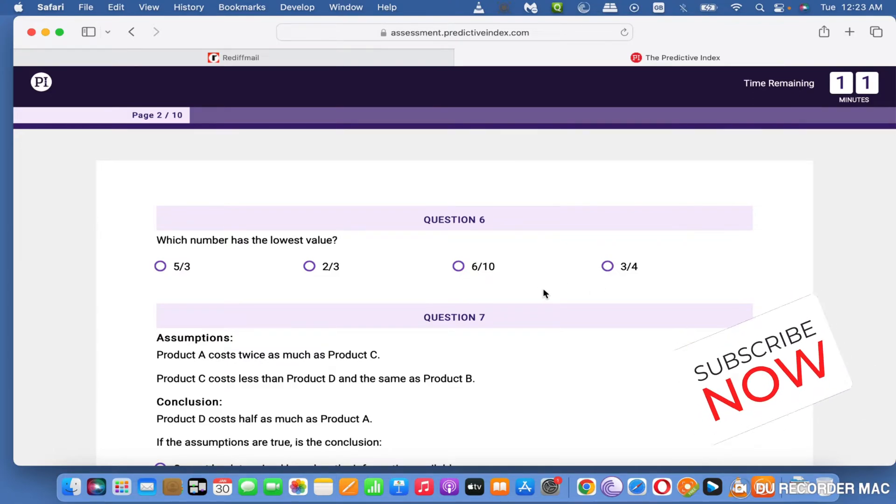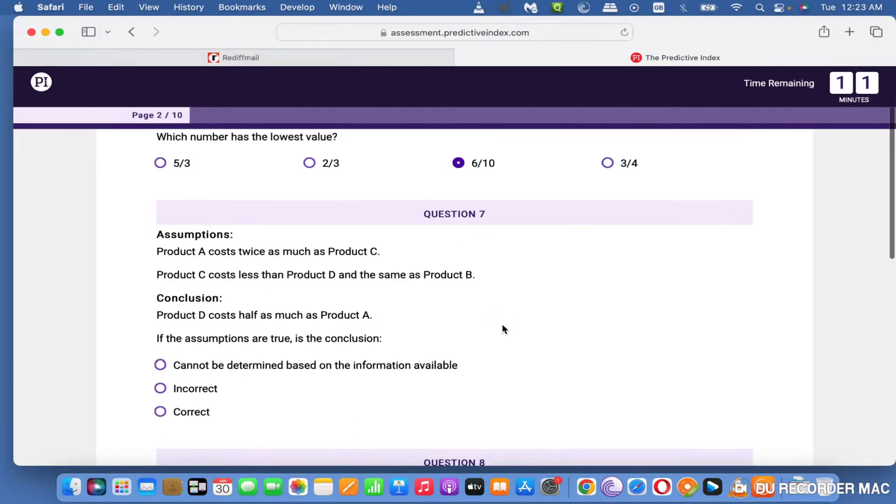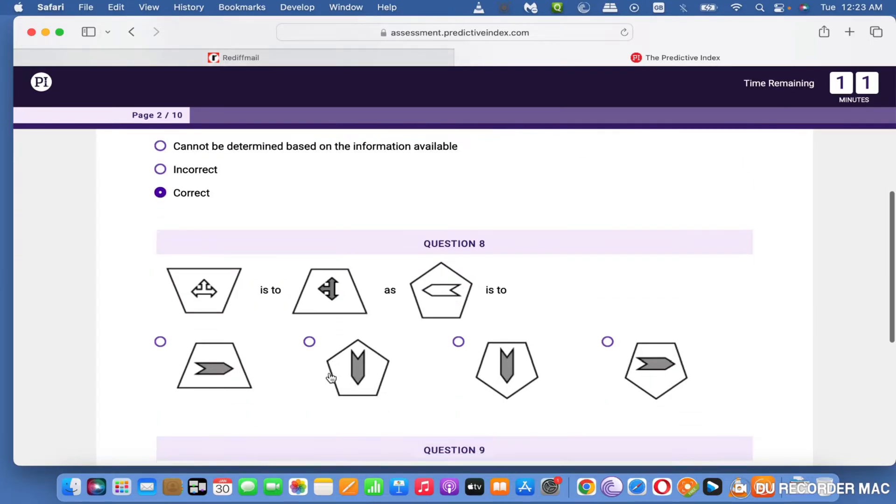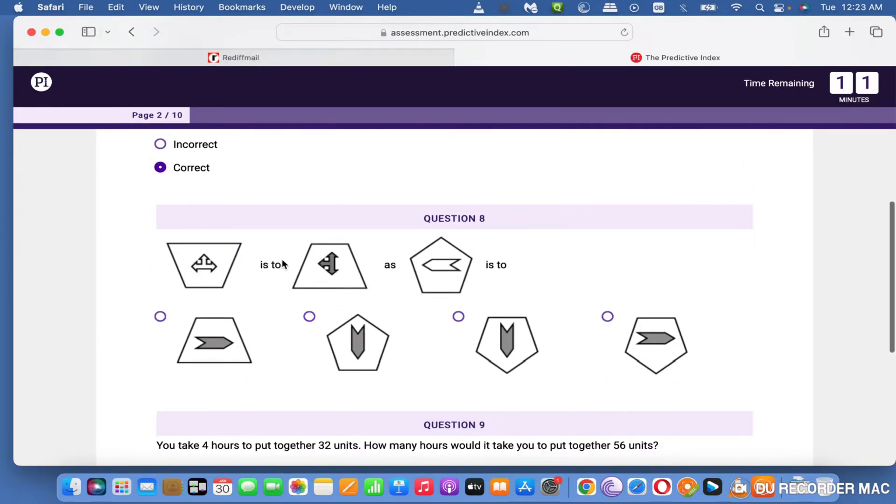Sometimes a question like 'which number is the lowest' will appear two or three times but with different configurations of numbers. Assumption questions take a little bit of time to read and assess. This one is moving in an anticlockwise direction, so the arrow will be downwards, the gray one.